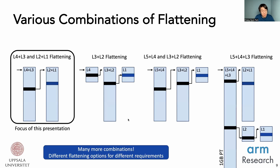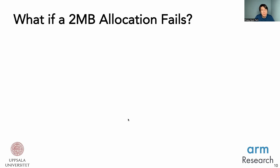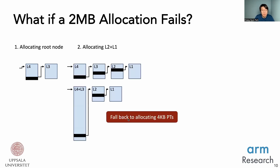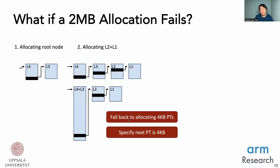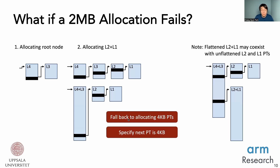In this work, we focus on flattening the root and leaf levels. When a 2MB page allocation fails — whether at the root or leaf level — we can fall back to allocating normal 4KB page table nodes, and instead of one level, we will need two levels instead. We need to ensure that any pointer to a page table specifies whether it points to a 4KB or 2MB page table node. This enables a page table where part of the leaf is not flattened, and that is totally fine with our design.